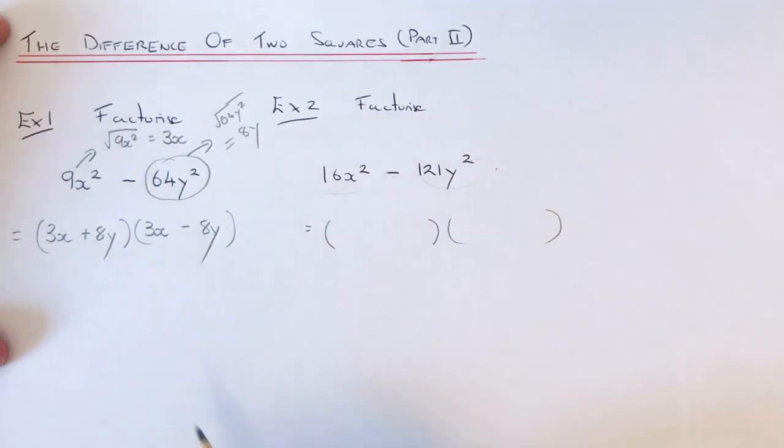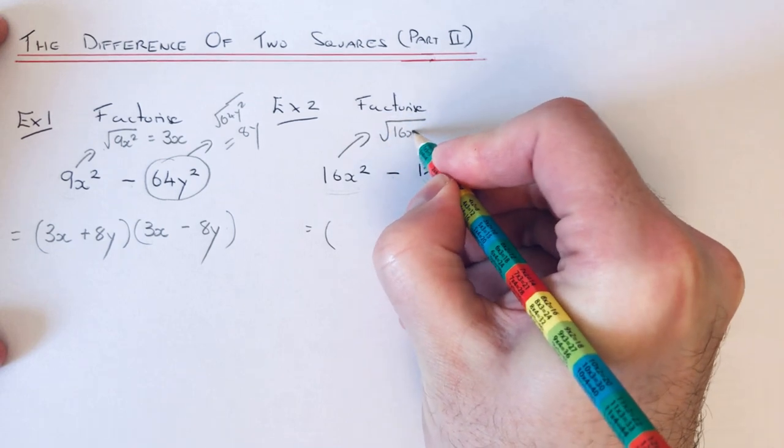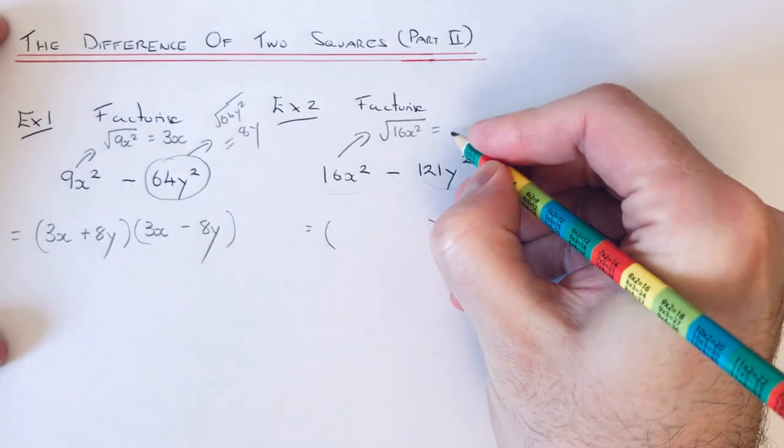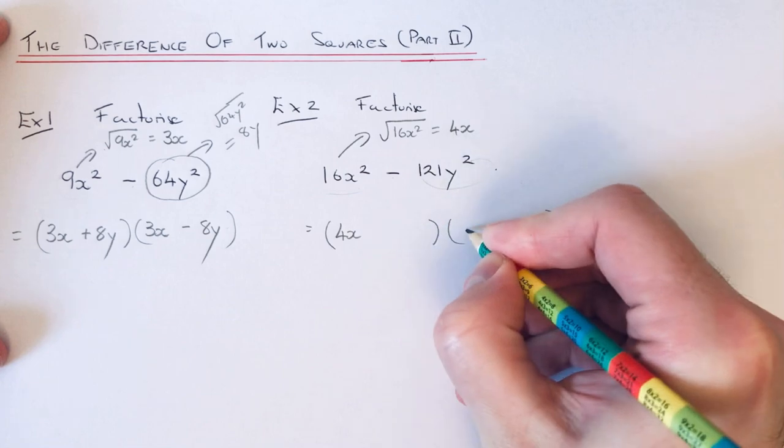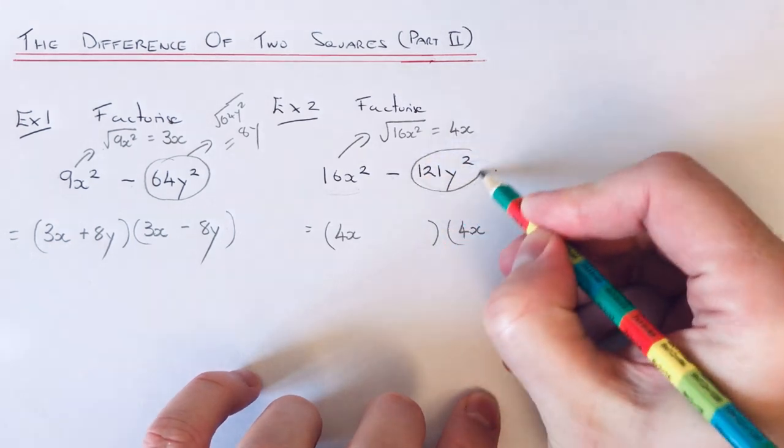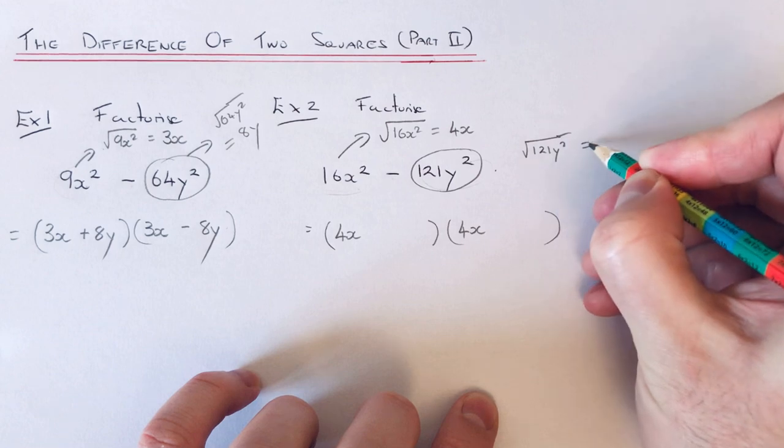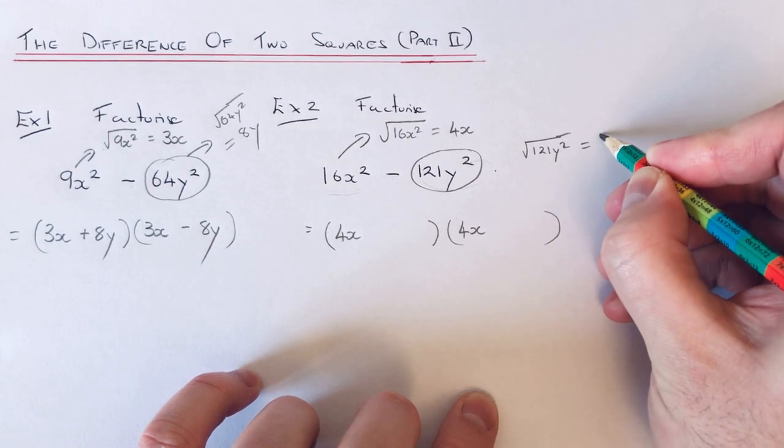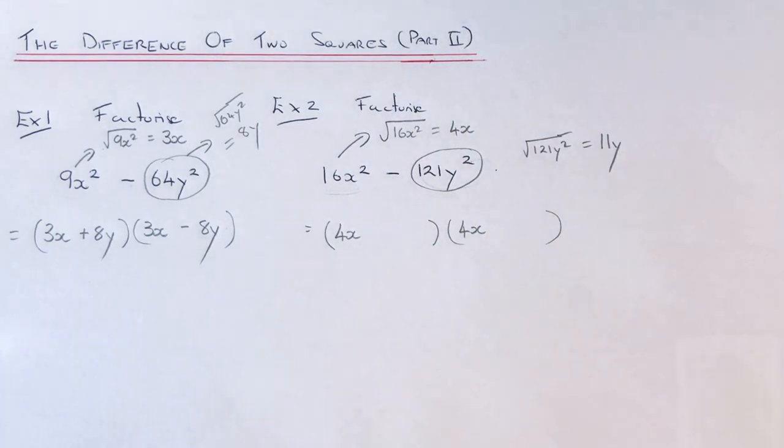So all we've got to do then is square root 16x squared, so that would be 4x because 4x times 4x is 16x squared. So if we put that term at the start of each bracket, do the same for the second term. So the square root of 121y squared, that would be 11y because 11y times 11y is 121y squared.